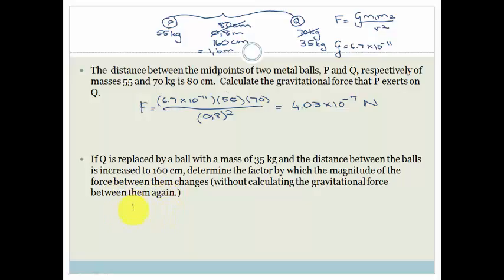Okay, so in other words, we know that F, the original F, was G M1 M2 over R squared. And I'm going to change that to being G, mass of P, mass of Q, over R squared. And we know that that is 4.03 times 10 to the minus 7, because we've just worked it out, for the original. Now, we've replaced Q with a ball that is half its mass.